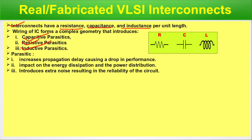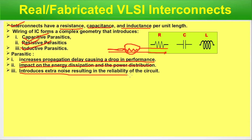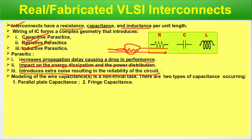Current flowing in different nearby conductors impacts each other. Parasitics increase propagation delay, causing a drop in performance, and impact energy dissipation and power distribution. If long interconnects have resistive, capacitive, and inductive values, then as current travels from one node to another there will be undesirable changes that introduce extra noise, resulting in reliability issues of the circuit. We need to model resistive, capacitive, and inductive parasitics of wires and do checks so the chip doesn't fail.